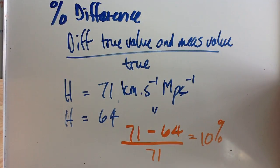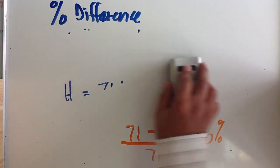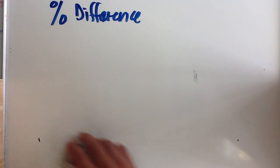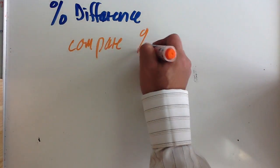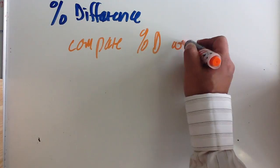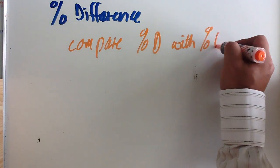Now in lots of questions you are asked whether the value that you've calculated is actually a reliable data point. The key thing to remember is that when you're asked that question, you have to compare your percentage difference with your percentage uncertainty.